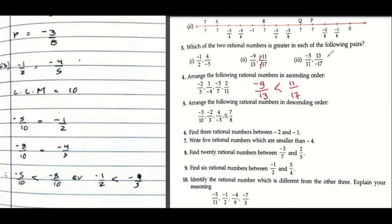That's why at times logic also helps you. There's no need to take LCM. If you do it by LCM with 13 and 17, it will be a very big calculation. Now it takes only half a second—positive is greater, negative is smaller. So 11/17 is greater.